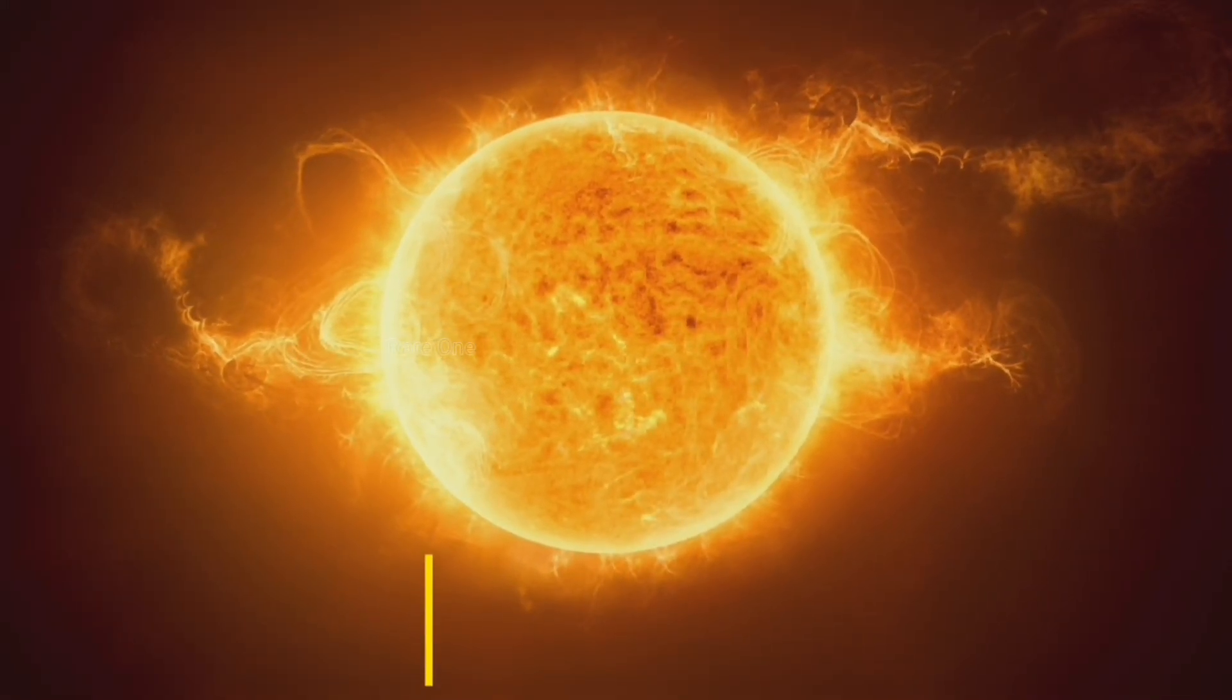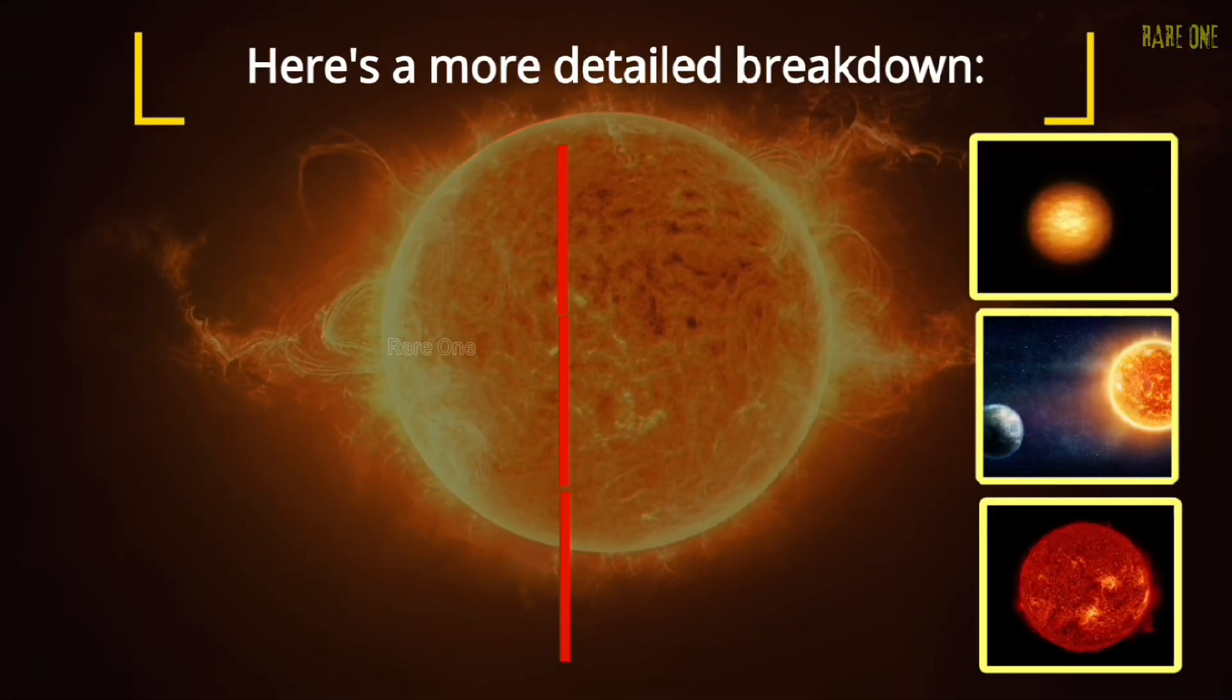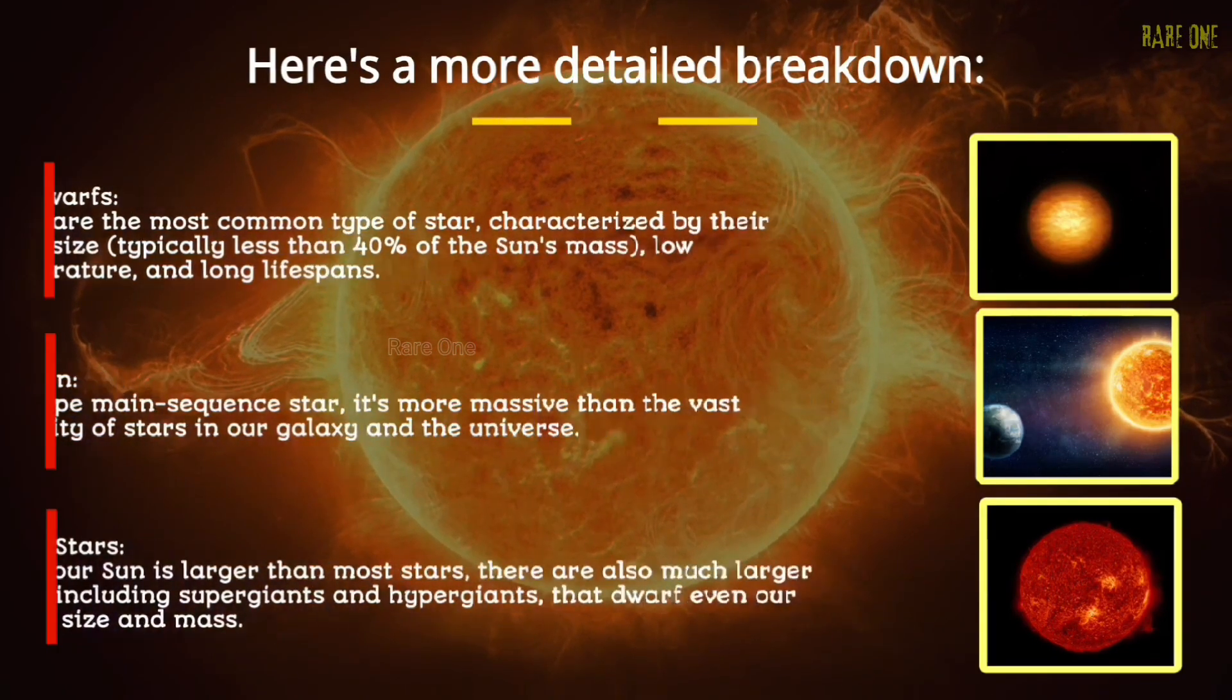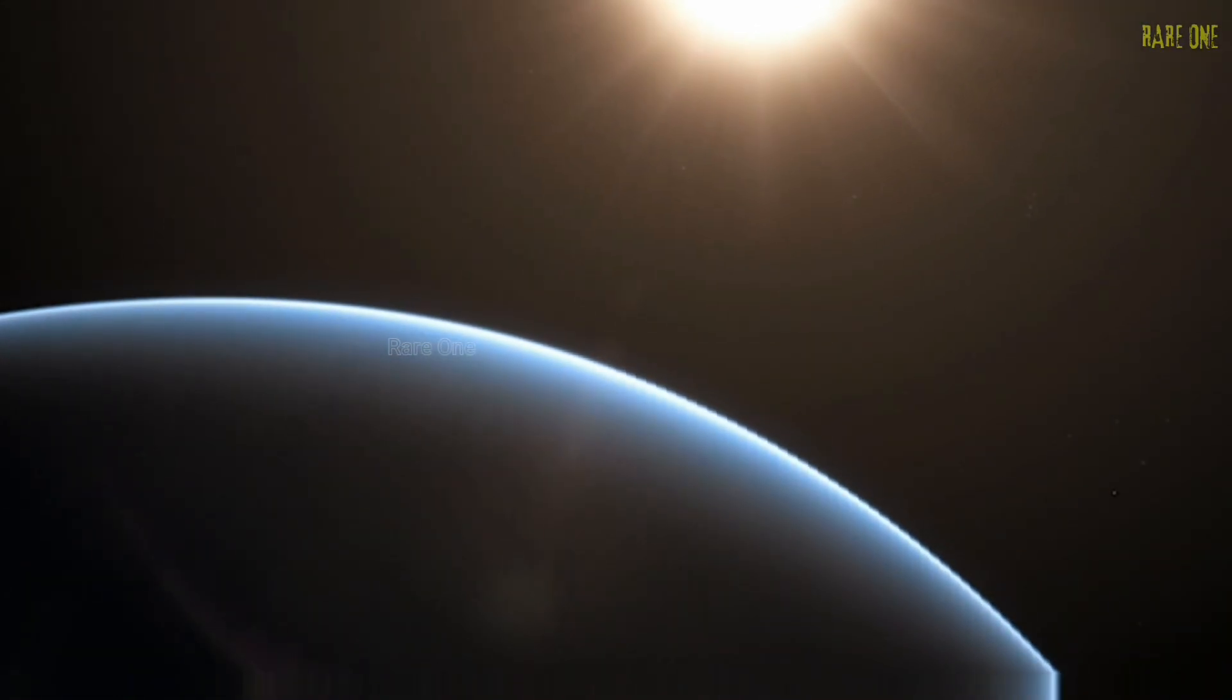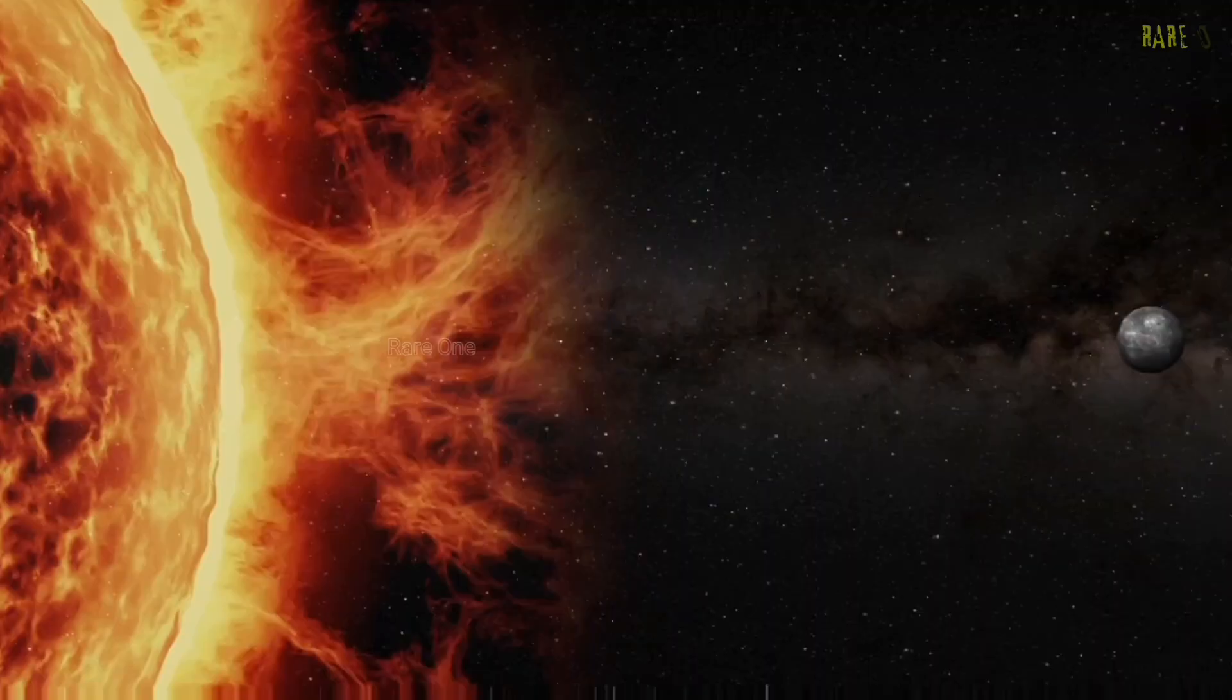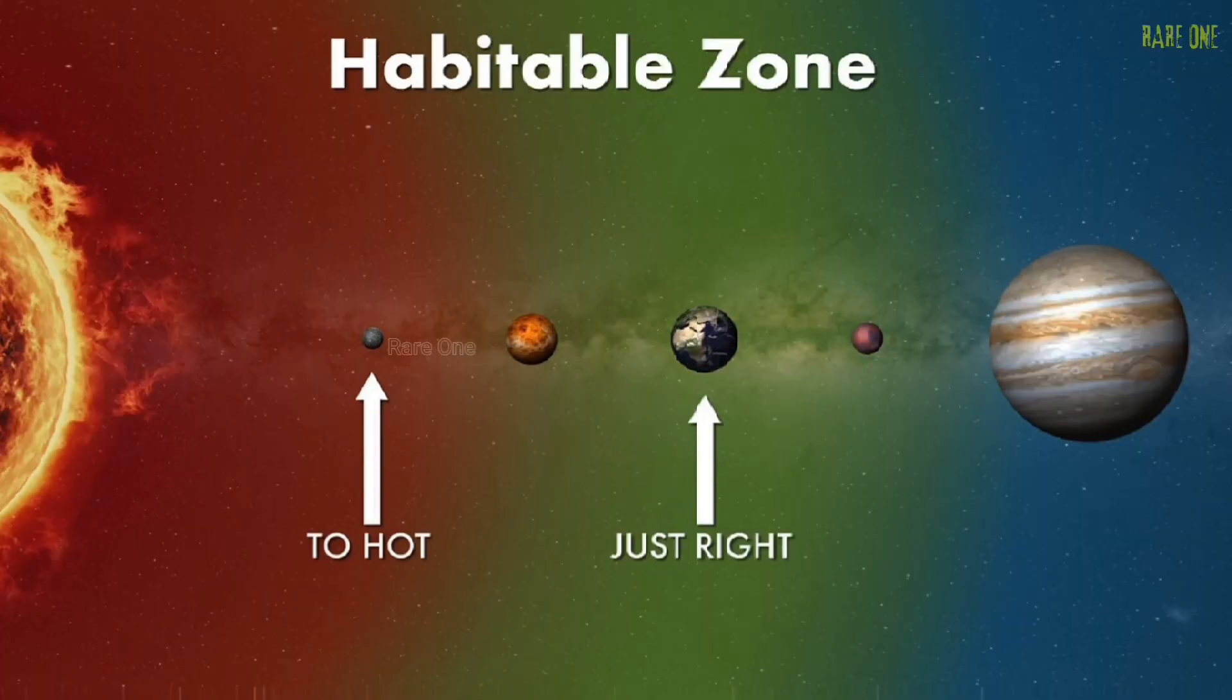Here's something that might surprise you: our sun is actually pretty impressive by cosmic standards. It's more massive than 95% of all stars in the universe. Most stars, about 75 to 80%, are red dwarfs—tiny, cool stars with less than 40% of our sun's mass. But our sun had another crucial advantage: it was alone. No stellar companion. No binary partner. Why does this matter? We now know that rocky planets in the habitable zone, where liquid water can exist, are almost impossible in multistar systems. The gravitational chaos makes stable, life-friendly orbits nearly impossible.